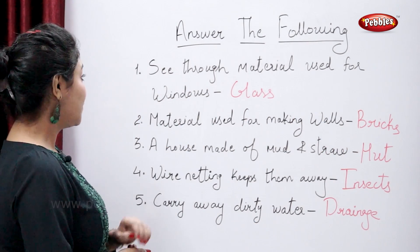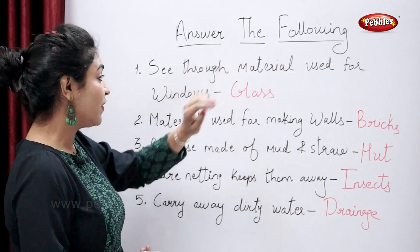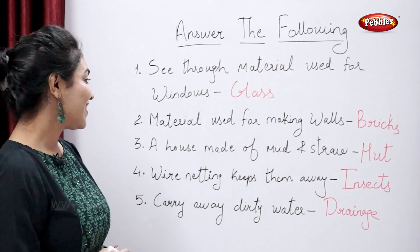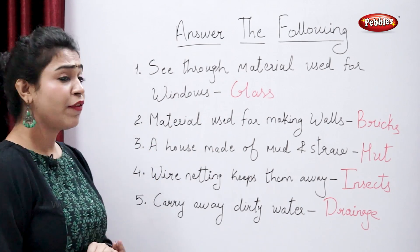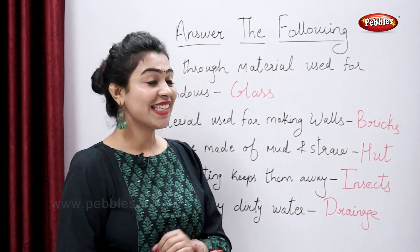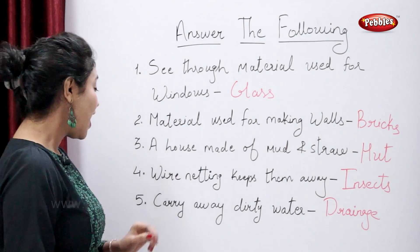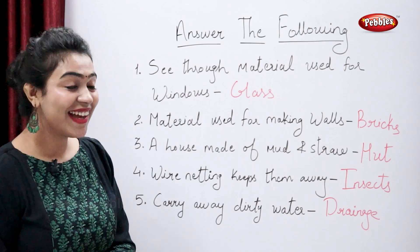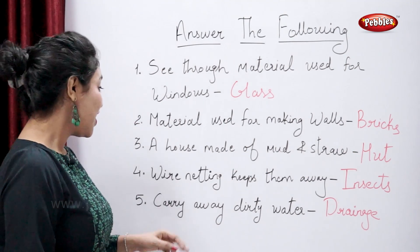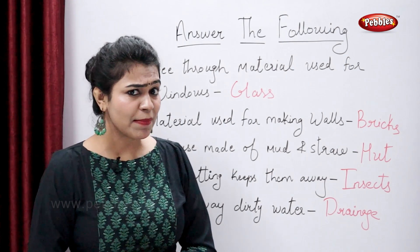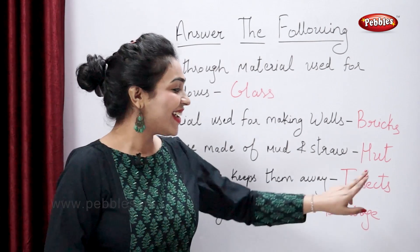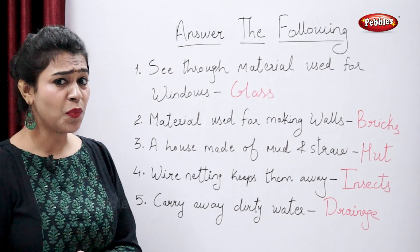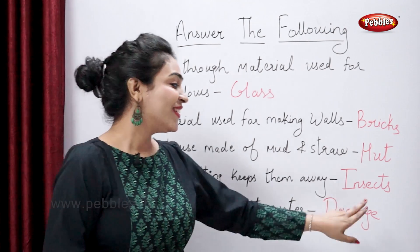Let's review: See-through material used for windows — that is glass. Material used for making walls is bricks. A house made of mud and straw is a mud house. Wire netting keeps away insects. Carry away dirty water — drainage.